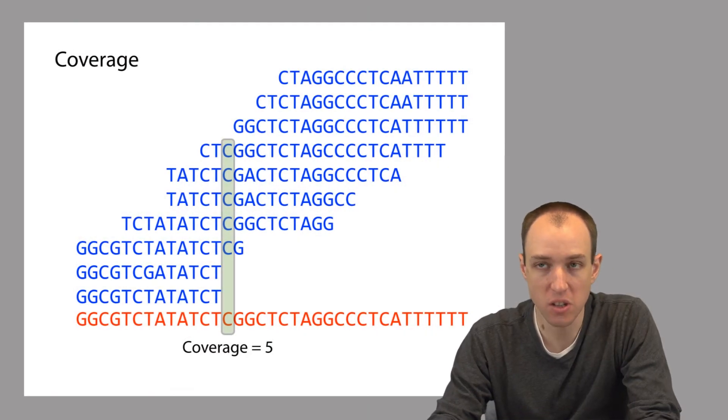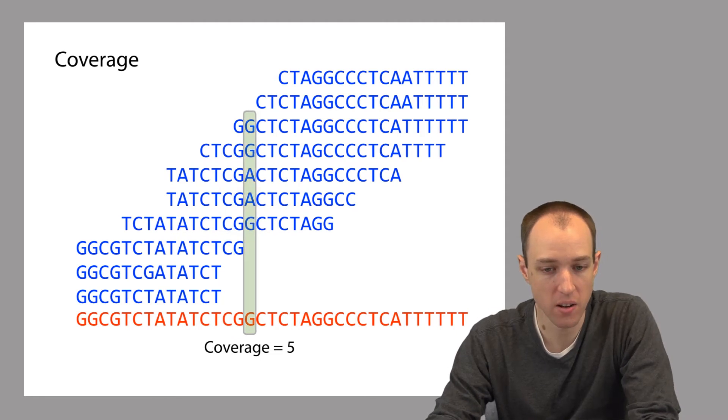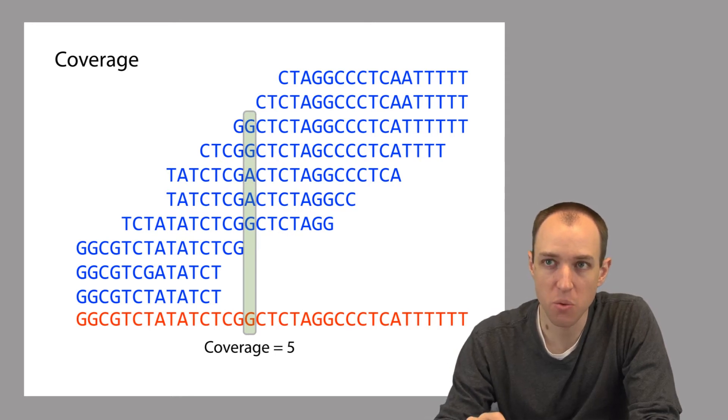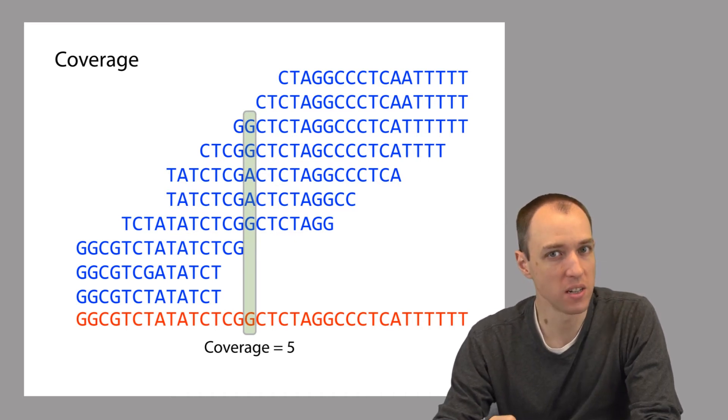So in this case, if we look just two positions over to the right here, so now we're looking at this highlighted position, we see this position also has a coverage of five. But if we look at the reads covering that position, we can see that they do not all agree on which base appears there. Three of them are voting for the base G, and then two of them are voting for the base A. So we'll talk a little bit later about why this sort of thing might happen. So that's what coverage means when we're talking about coverage at a particular position in the genome.